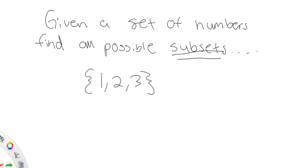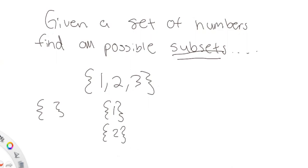So given {1, 2, 3}, how many different subsets can I pick? First, I could pick nothing — that's the empty set. I could pick just one by itself, just two by itself, or just three by itself. So we already have four subsets: the empty set, {1}, {2}, and {3}.